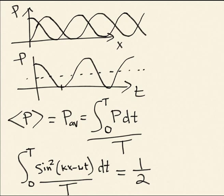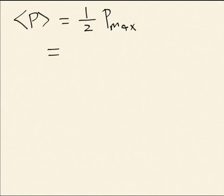And so the answer then for the average power is just going to be equal to 1 half times the maximum power, which is going to be 1 half root mu T times omega squared a squared. All right. So let me stop there.